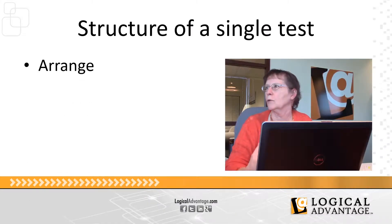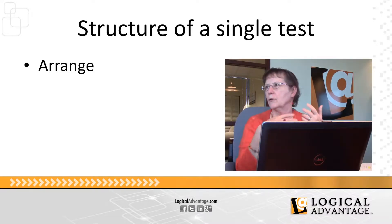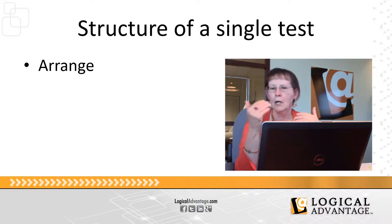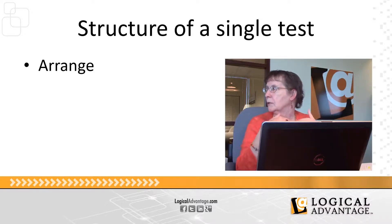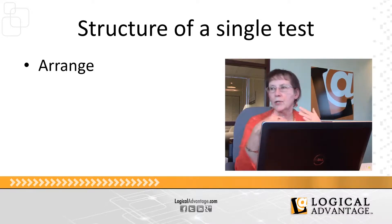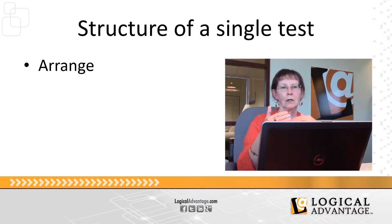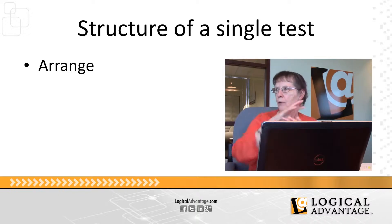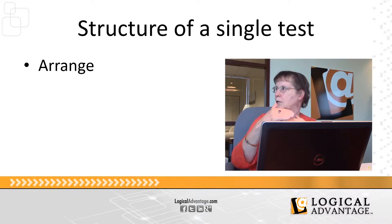When writing a unit test, there's a basic pattern to follow. The first piece is Arrange — setting up your variables. If you're testing a method that requires input variables, you'd set those up here along with your expected result fields so you have something to compare against. For example, if setting a property, you'd set an input property name and its value, then an expected result field name and its expected value. That way everything is set up at the top.